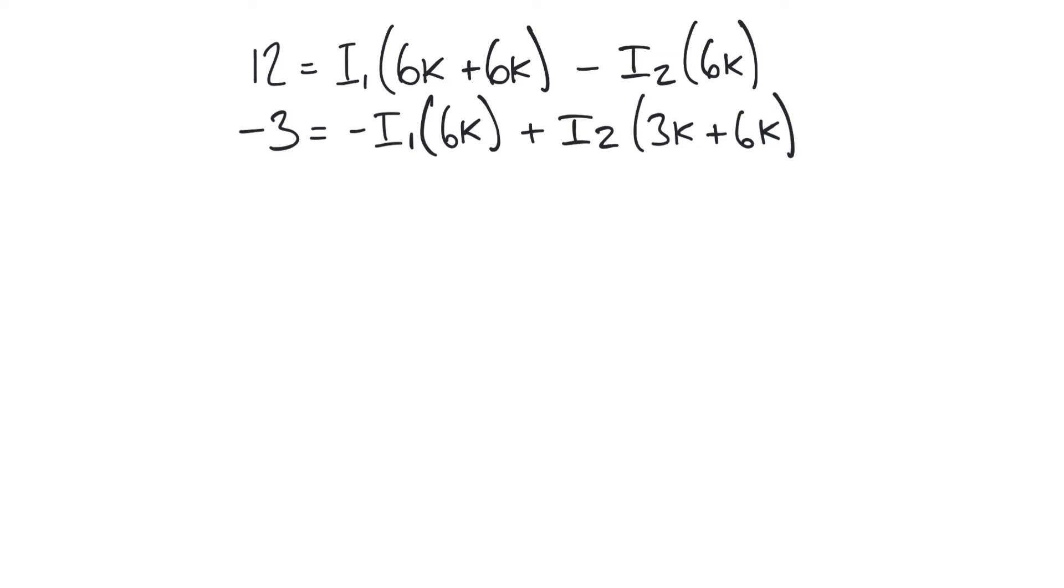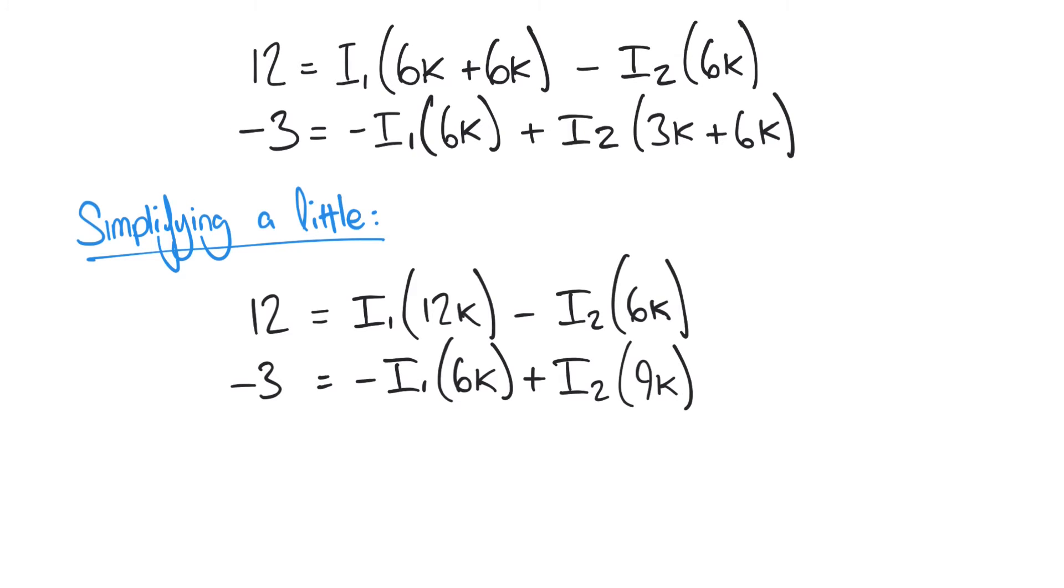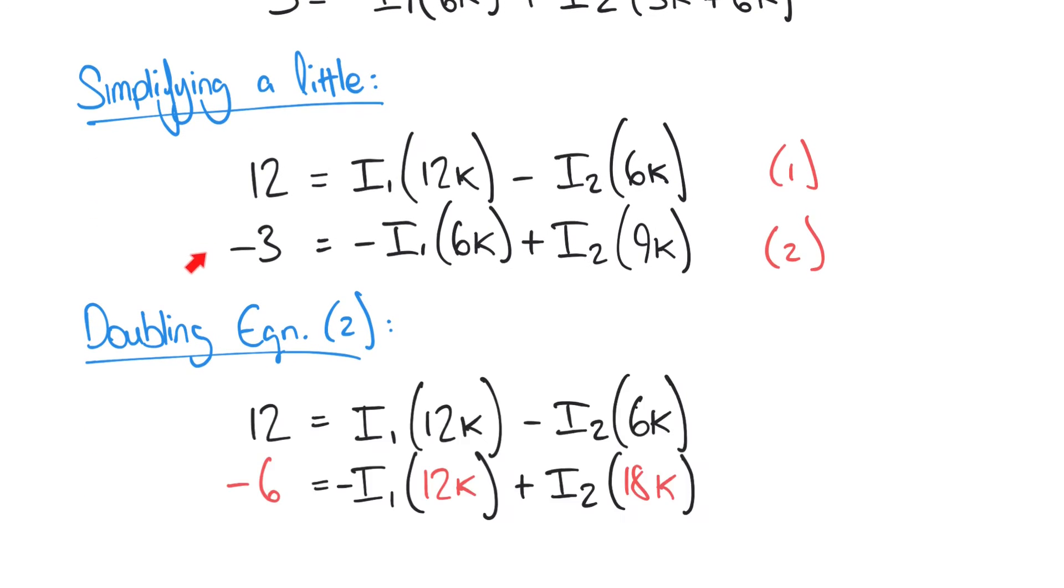So in this particular instance, we've got simultaneous equations that are quite easy to solve. In this case, we could double the second equation here. So rather than minus 3, we'd have minus 6. And doubling the rest of it, we'd have minus I1 times 12k plus I2 times 18k. And that means that these two I1 terms will cancel if we add these two equations together.